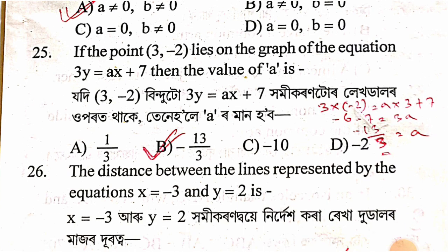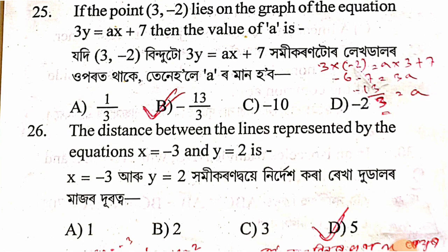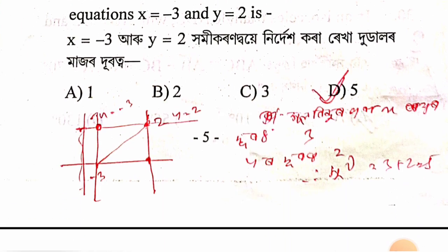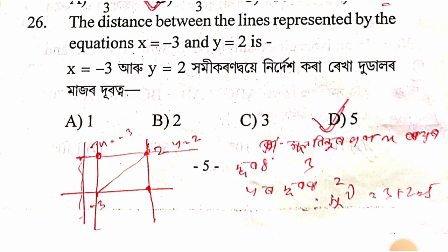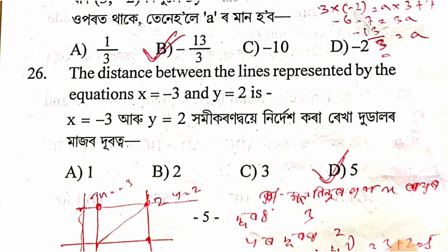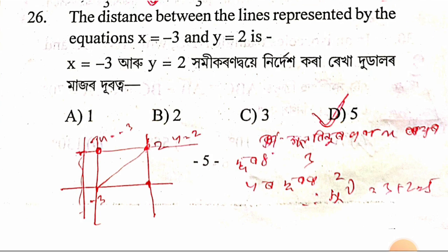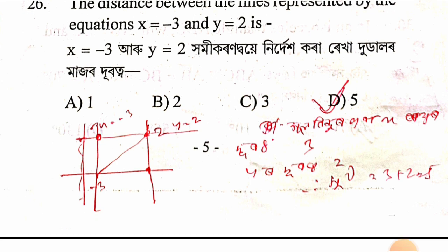For x = −3, this represents a vertical line parallel to the y-axis passing through x = −3.